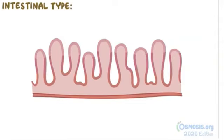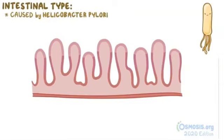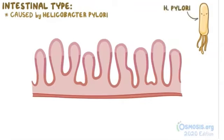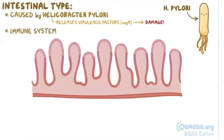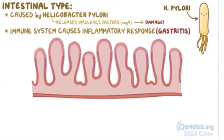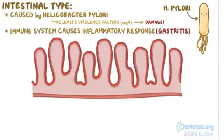Intestinal type is the most common. In most cases, it's caused by the bacteria Helicobacter pylori, or H. pylori for short. H. pylori releases some virulence factors, like CagA, that go inside the epithelial cells and cause extensive damage. The immune system detects this damage and causes an inflammatory response within the gastric lining, causing gastritis. As long as H. pylori remains in the stomach, it continues to damage the mucosa, and local inflammation persists, leading to chronic gastritis.